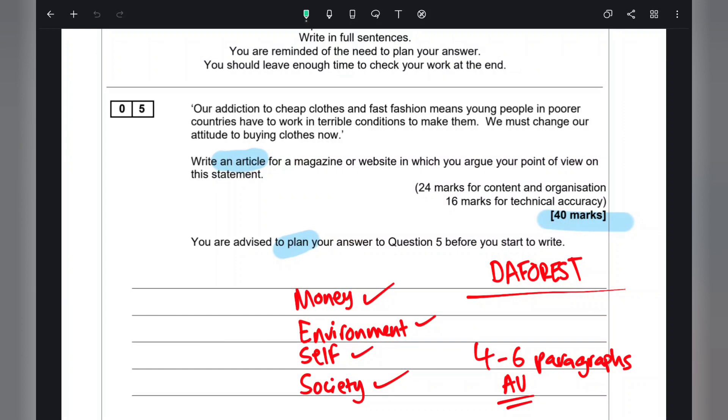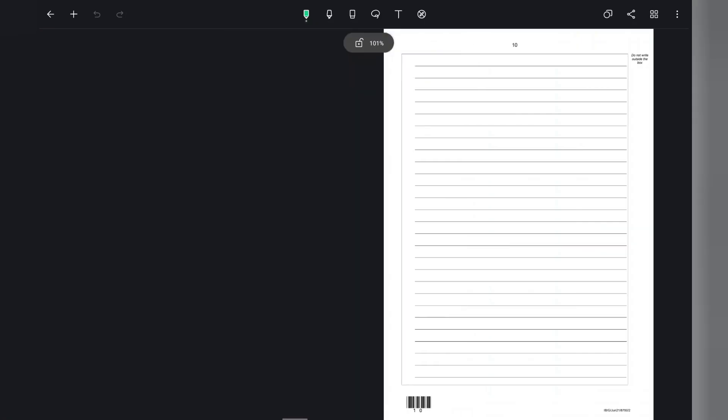What I would say is to crack on and get started with that question, giving yourself exactly 45 minutes. Spend the first five minutes planning, the next 30 minutes writing, and the last five minutes checking your work. Remember: ambitious vocabulary, a range of language techniques, and varied punctuation. After 45 minutes, quickly move on to Section A.